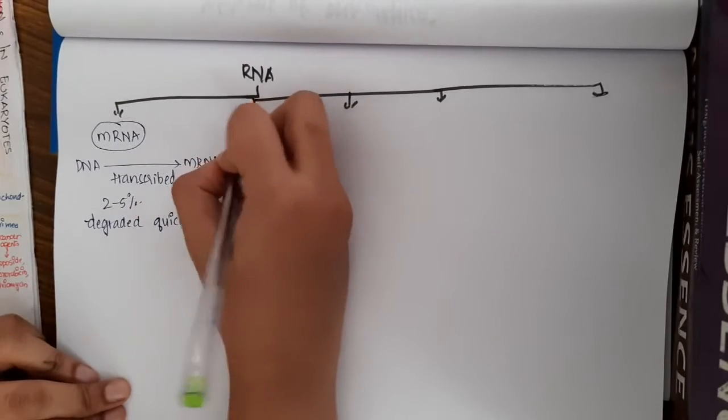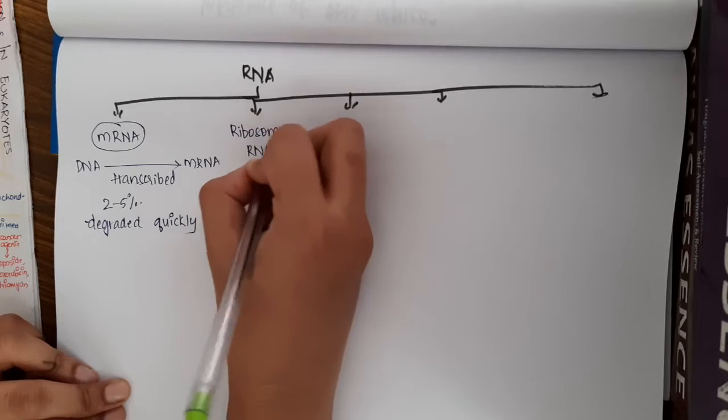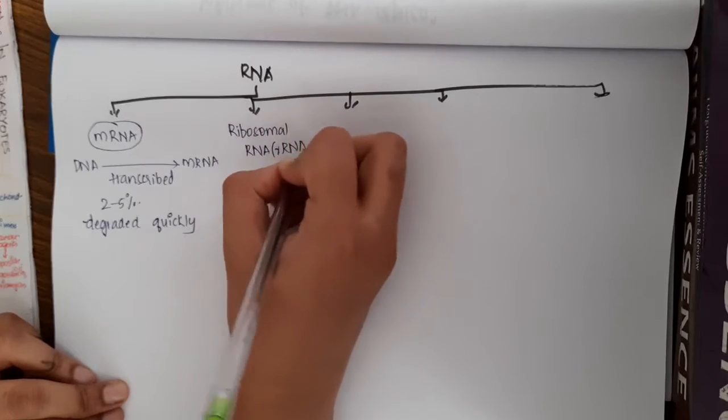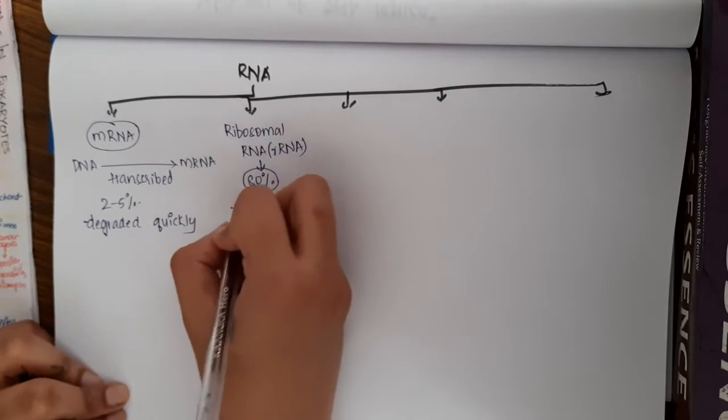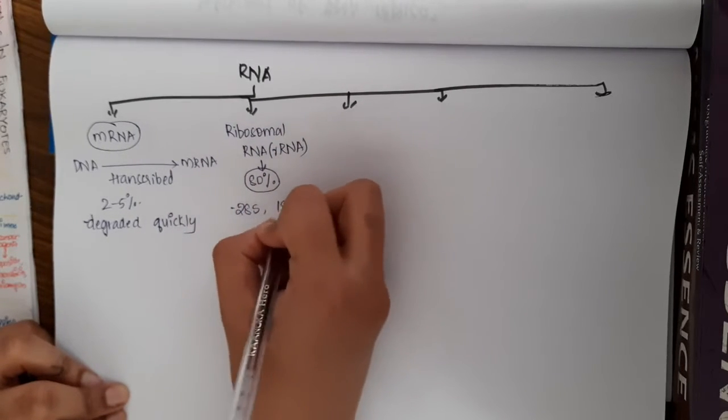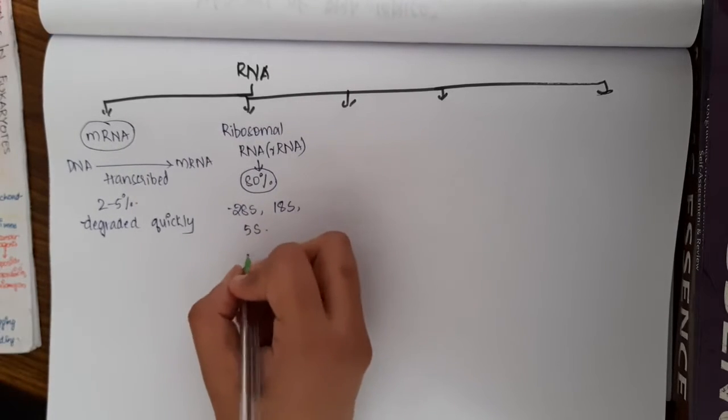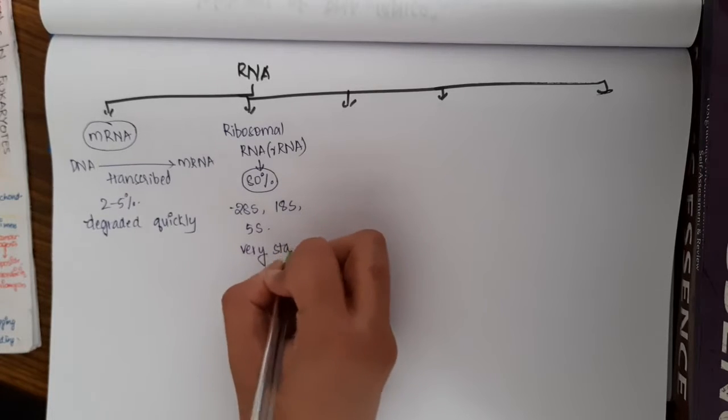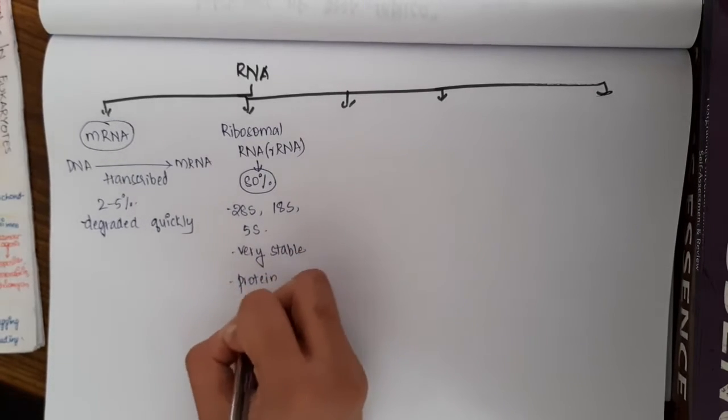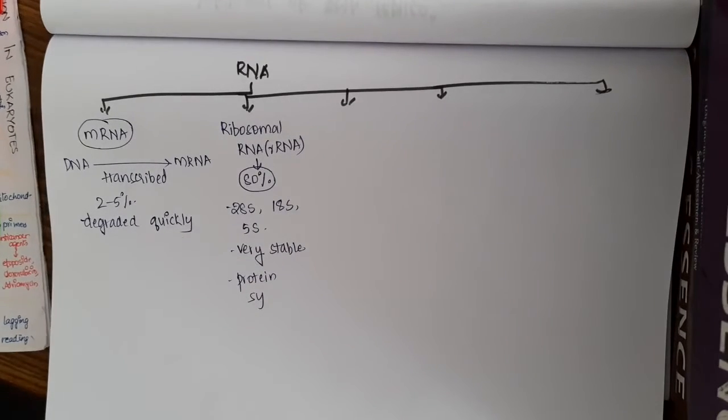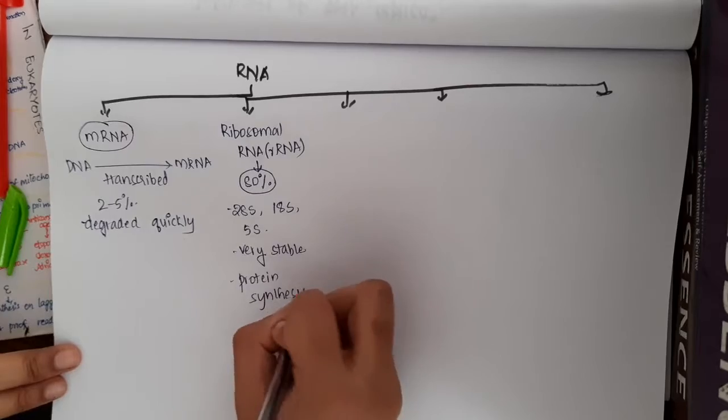Next, the second RNA is ribosomal RNA or rRNA. This constitutes almost 80% of all RNA in the cell. And it is of 28S, 18S, and 5S are the major varieties. This ribosomal RNA is very stable and involved in protein synthesis.